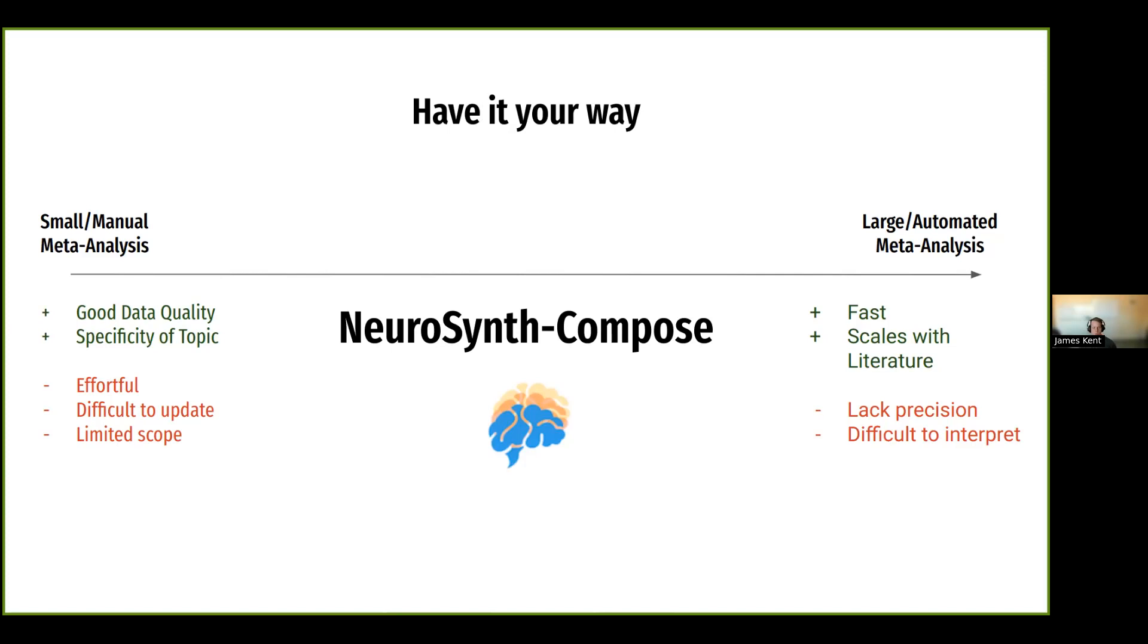So Neurosynth Compose tries to leverage both the positives of small manual meta-analyses and large-scale meta-analyses by extracting the coordinates and terms from the large-scale meta-analyses and allowing the user to manually edit and clean up some of those errors or things that they would disagree with as a part of that automated search. In addition, you can still just do a plain old manual meta-analyses or just a plain large-scale meta-analysis of Neurosynth Compose.